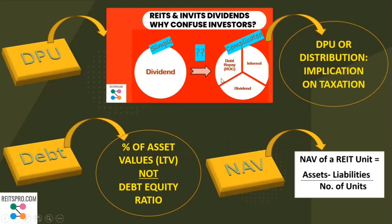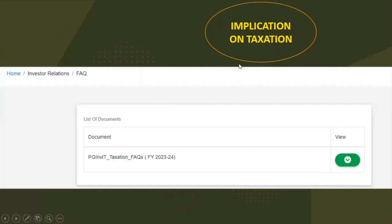The DPU is the distribution and it's important because it has implications on taxation. We've done a detailed video earlier on how the dividend is divided into return of capital, interest, and dividend, and why it's done. The debt of a REIT is expressed as a percentage of asset values, which is LTV, not debt-equity ratio like a normal equity stock. The net asset value of a REIT is net of assets and liabilities divided by the number of units, measured at fair value. For more on taxation implications, you can download the FAQ document from the PG InvIT website.